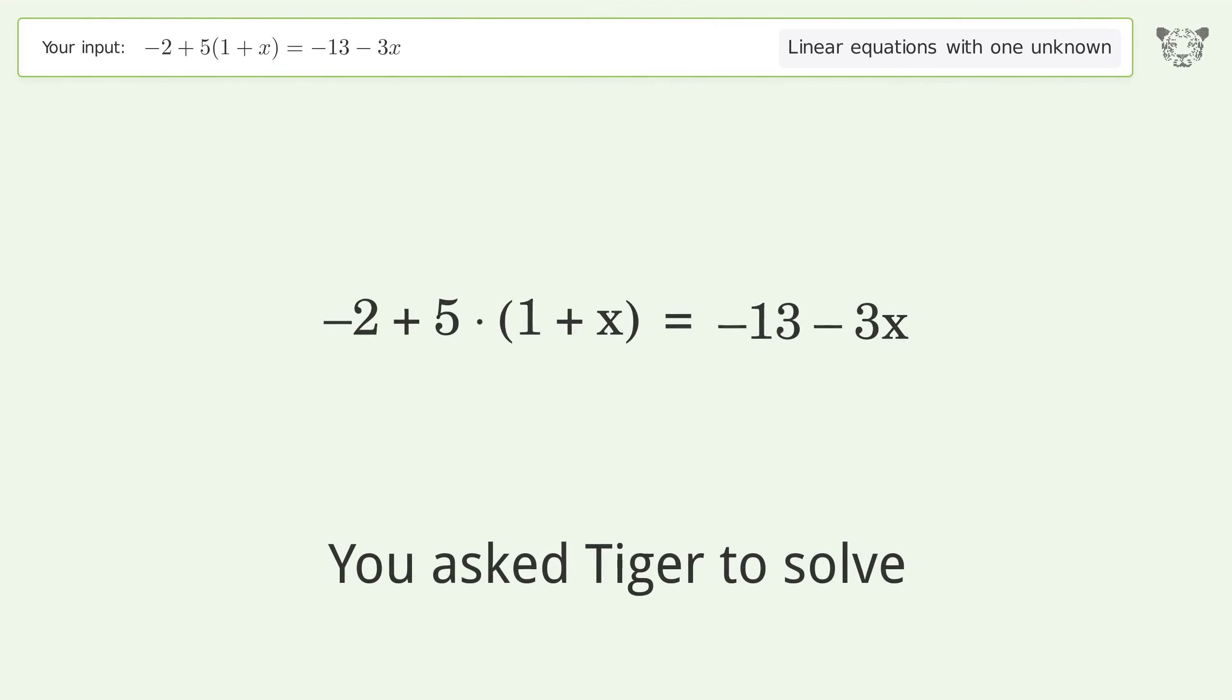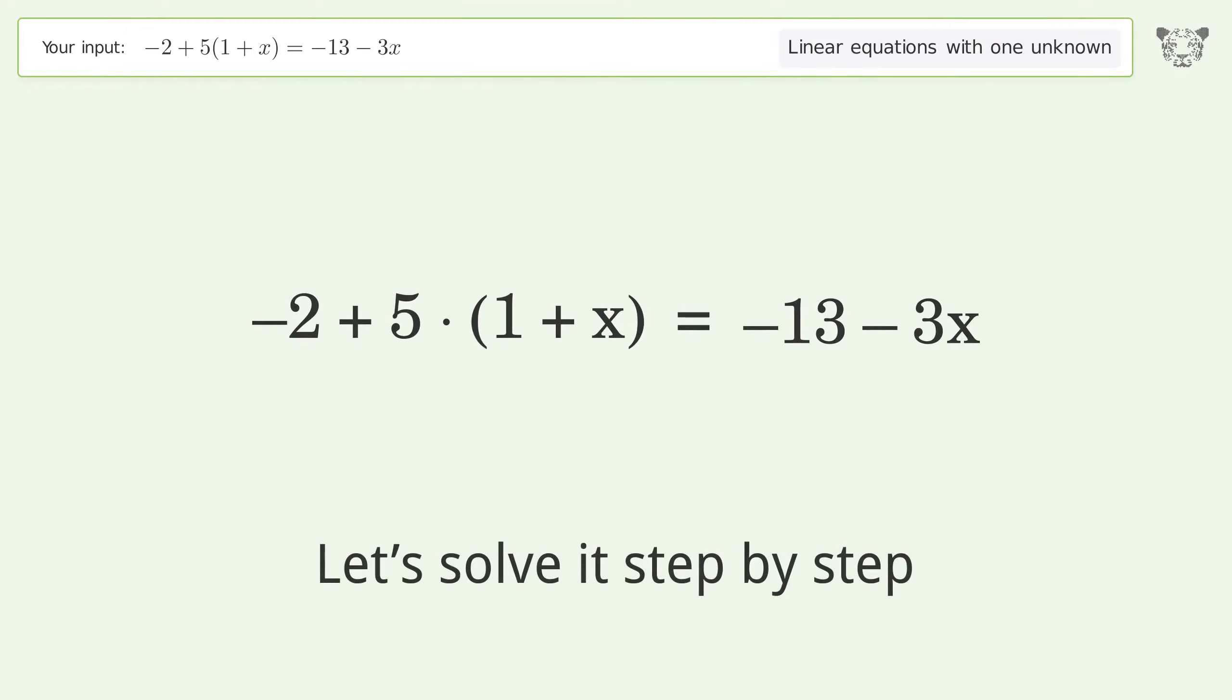You asked Tiger to solve this. This deals with linear equations with one unknown. The final result is x equals negative 2. Let's solve it step by step. Simplify the expression.